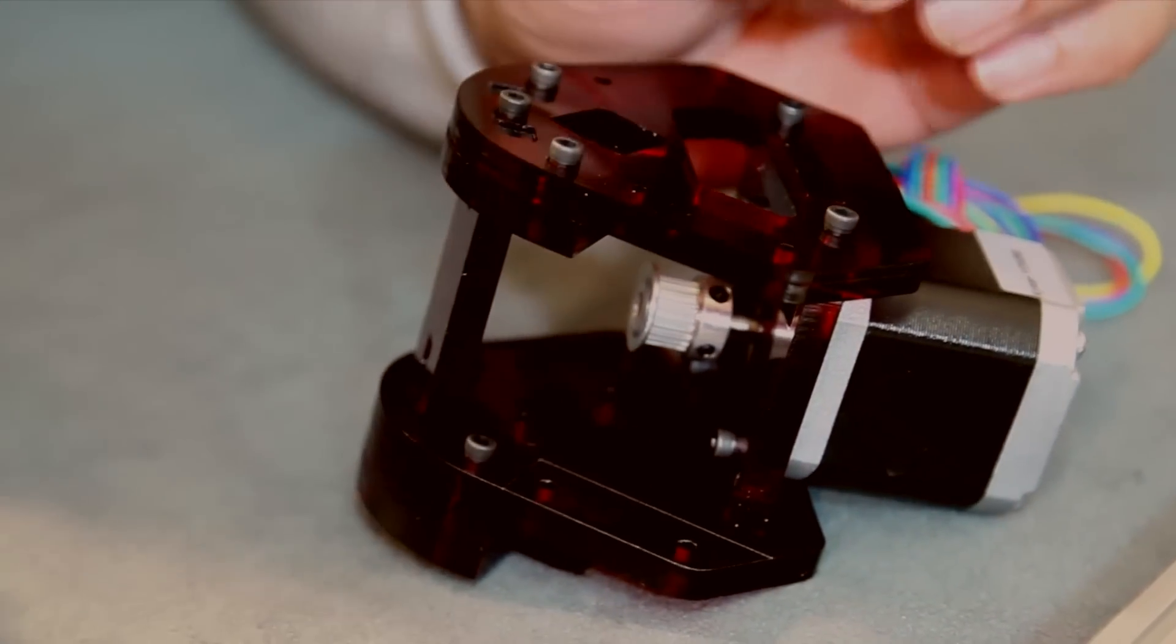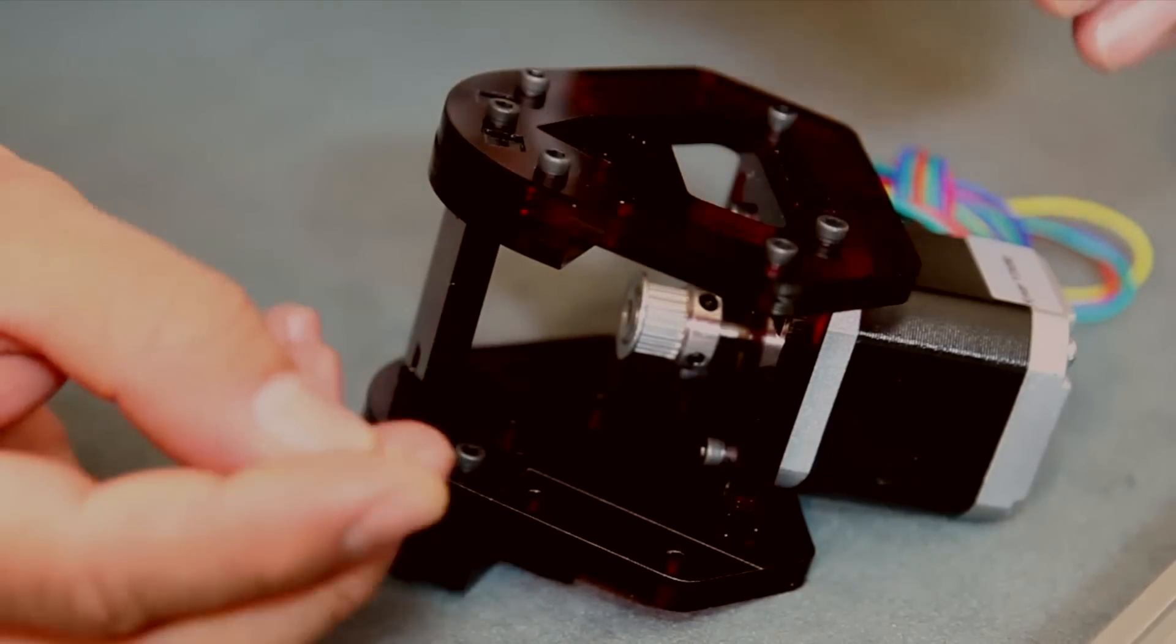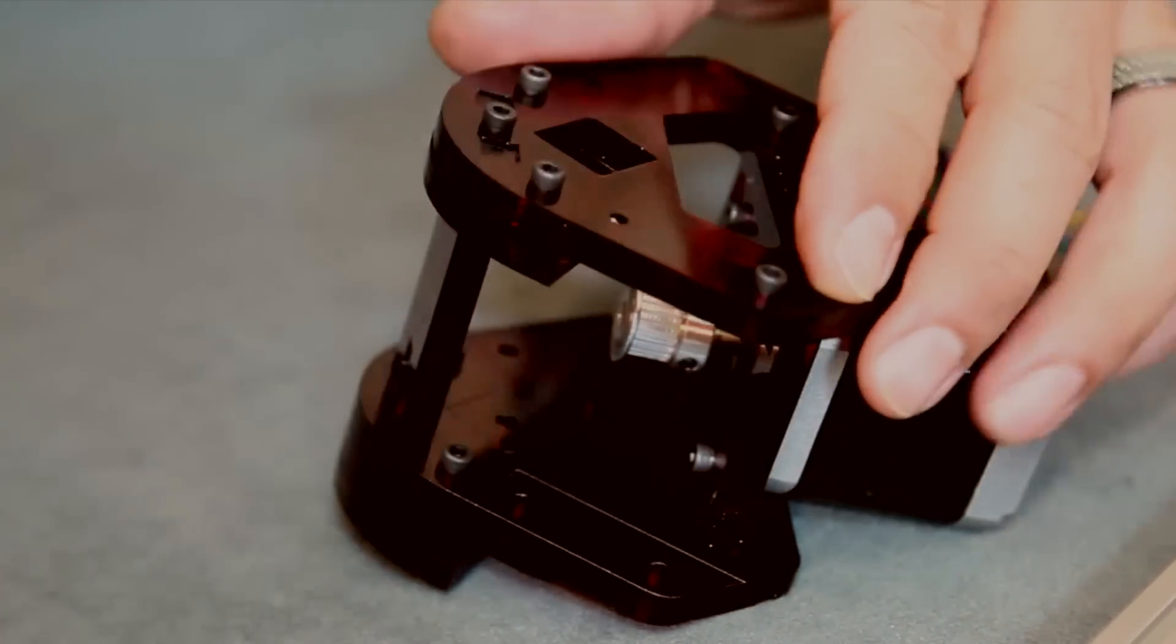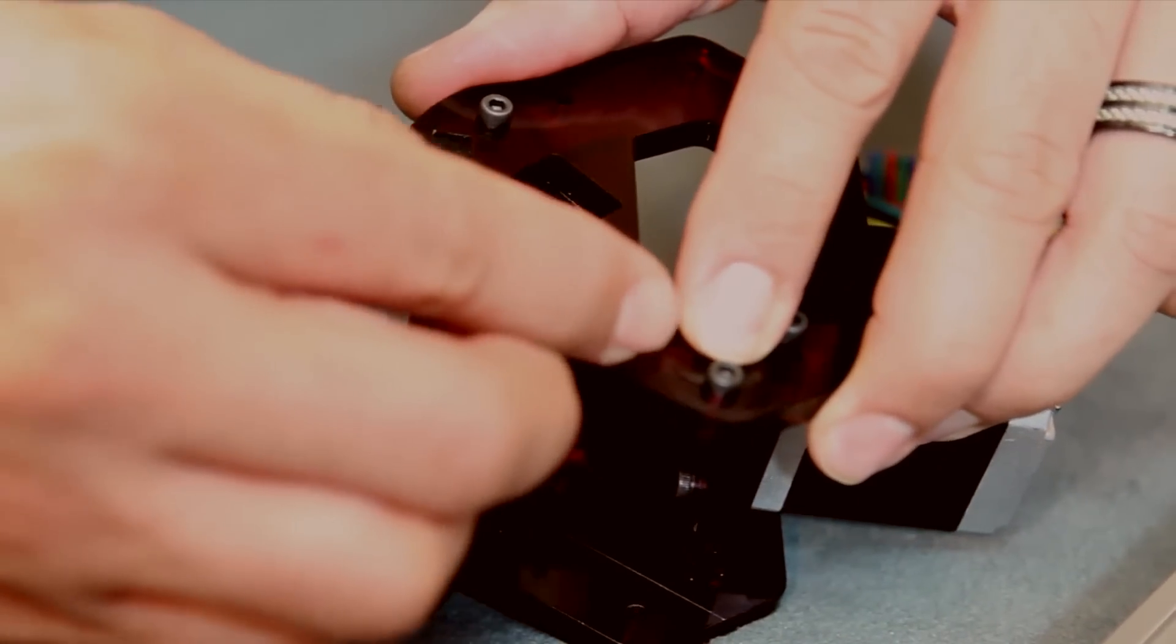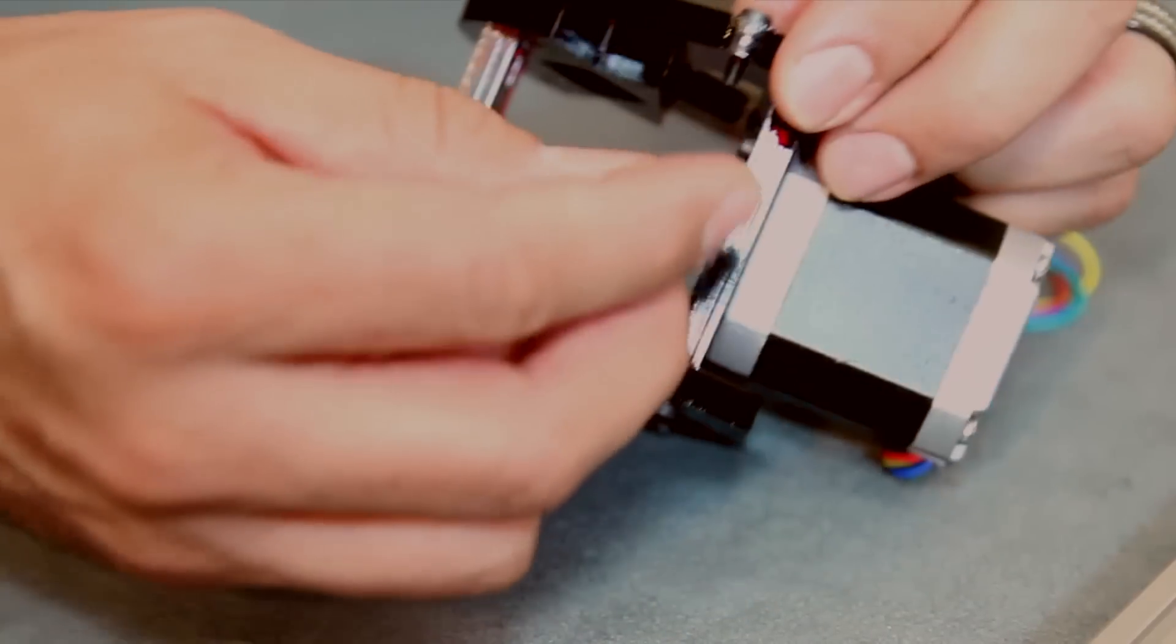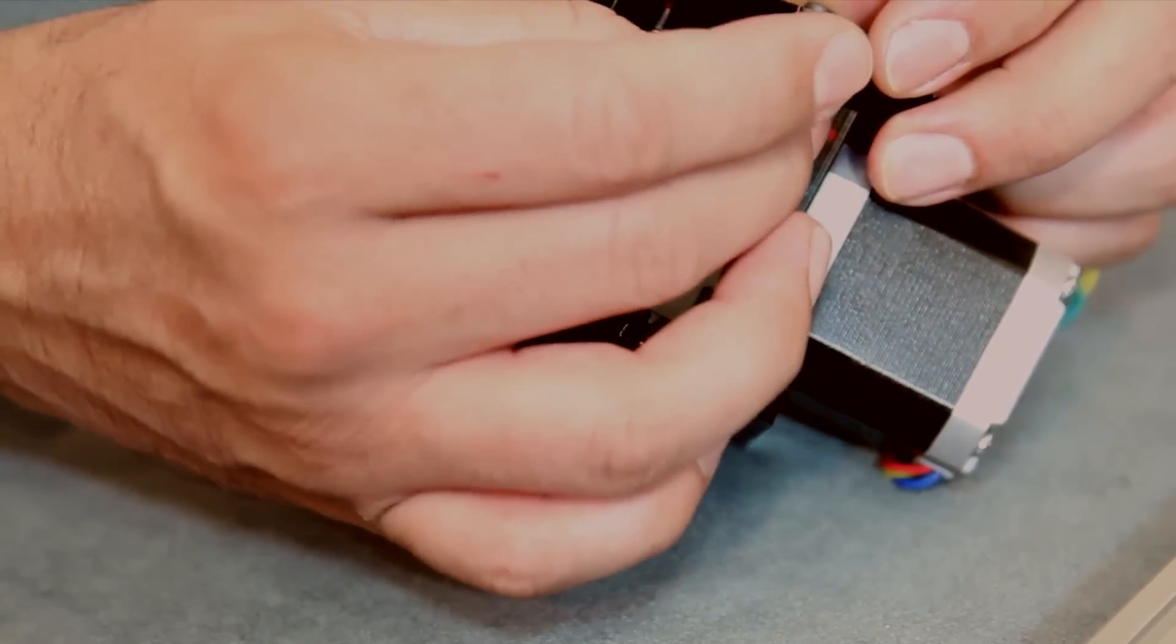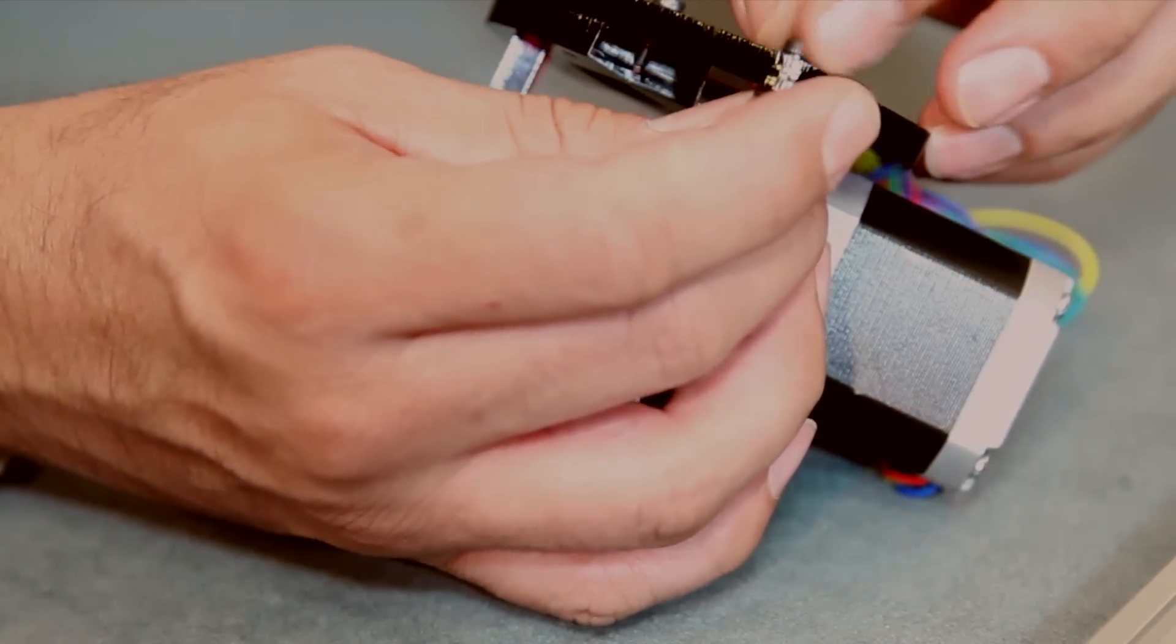First step here, you're going to take the M3 by 10 bolt and M3 nut. Your two bottom holes here is where you're going to put the two bolts on the top side. Take your bolt and your nut and start it off. You're just going to barely start it off where it just grabs enough and leave a space there in between.